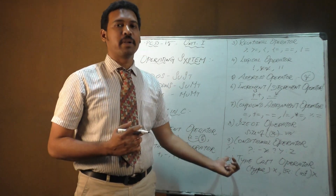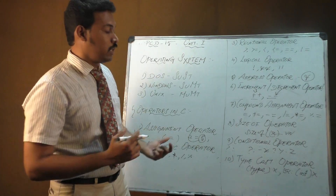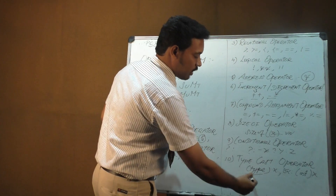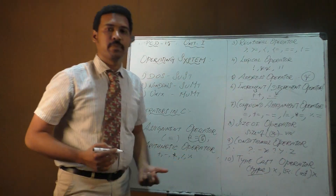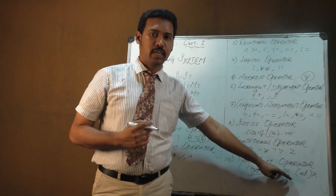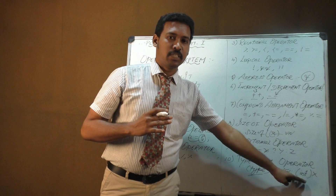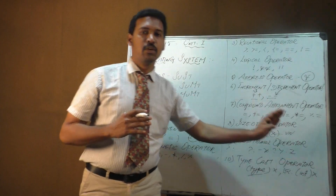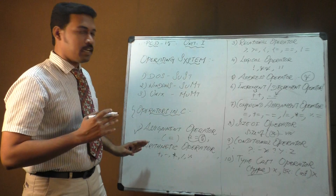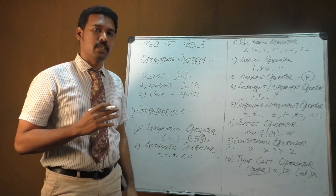The tenth is the type cast operator, used to convert a data type — for example, from integer to float or float to double — at any point in the program. The general format is (data_type) variable_name. These are the 10 operators available in C programming.